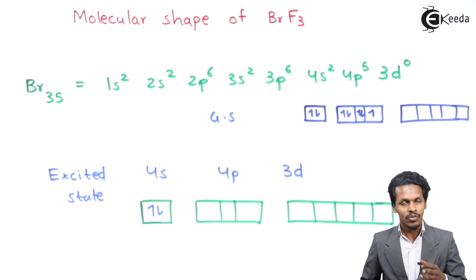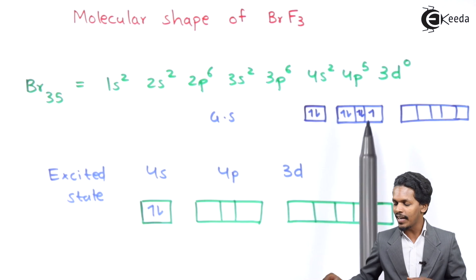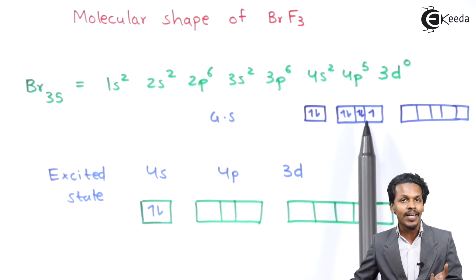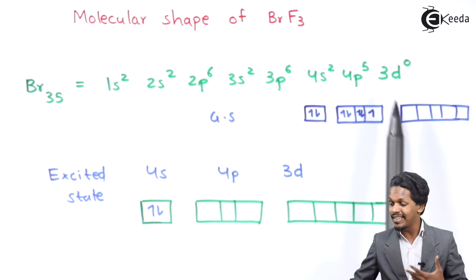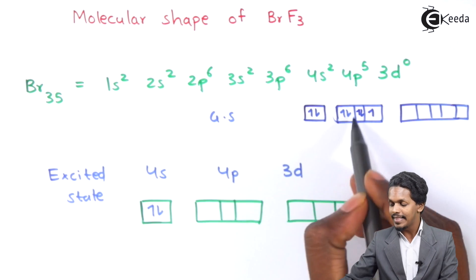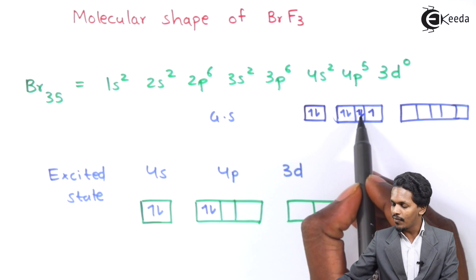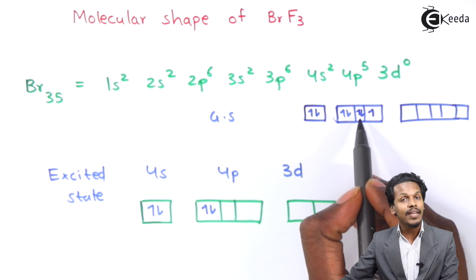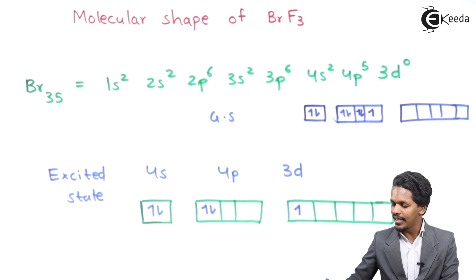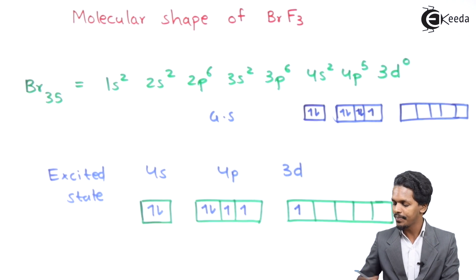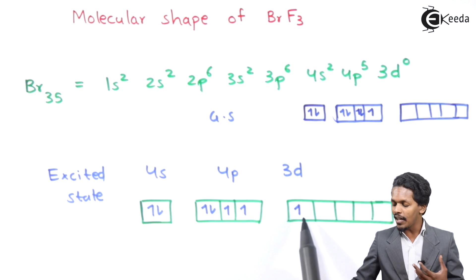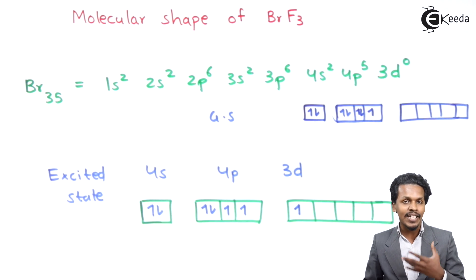Since bromine needs to bond with three fluorine atoms to form the molecule, we need three unpaired electrons. In the ground state we only get one unpaired electron, so one electron from the py orbital is shifted to the 3d orbital. This gives us three unpaired electrons and the necessary vacant orbitals.